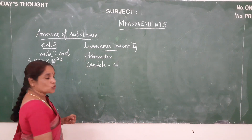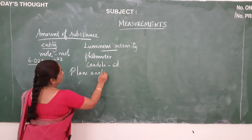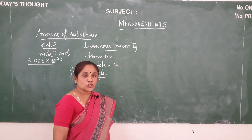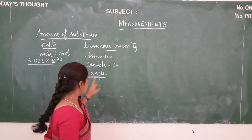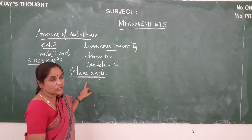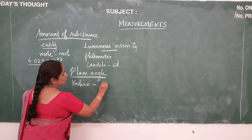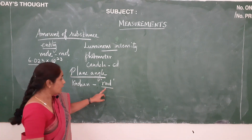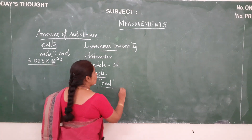Next we will move on to the next topic: plane angle. This plane angle is formed by the intersection of two straight lines or two planes at a particular point. The SI unit for plane angle is radian and it is denoted by rad. Before defining a radian, let us first see what a radian is.